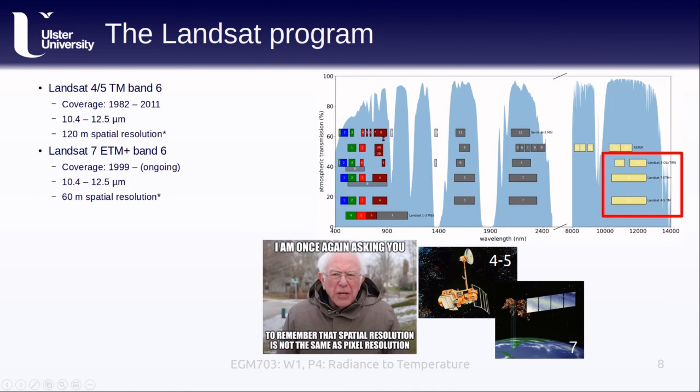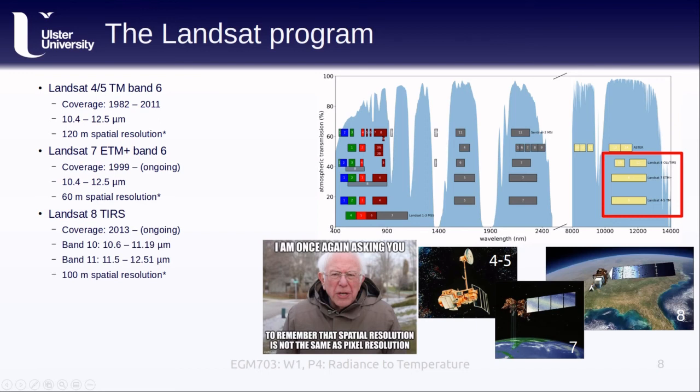The next Landsat sensor to carry a thermal sensor was the enhanced thematic mapper plus carried on the Landsat 7 satellite. The temporal coverage for these images starts in 1999 and is still ongoing, though Landsat 7 is rapidly approaching the end of its mission. Like thematic mapper band 6, ETM plus band 6 covers wavelengths from 10.4 to 12.5 micrometers, though with a spatial resolution of 60 meters, which again has been resampled to 30 meters.